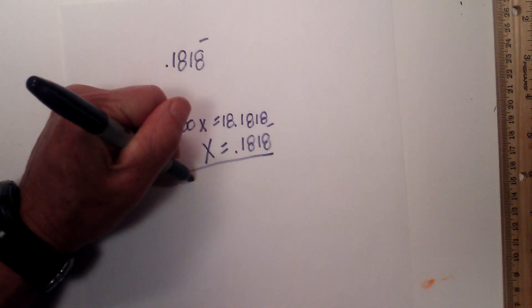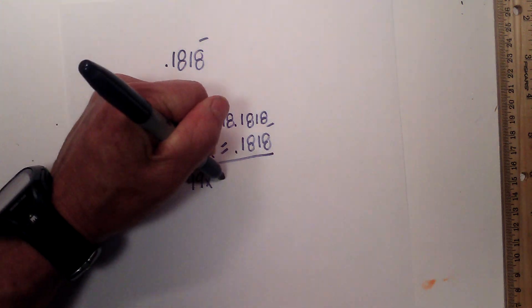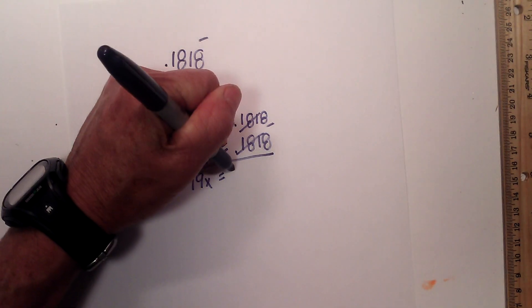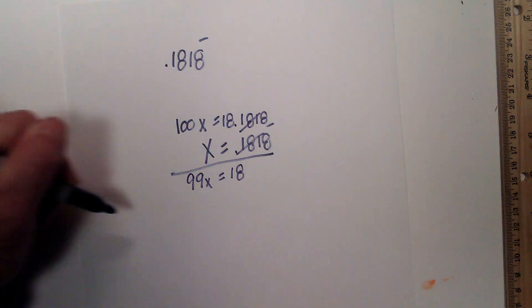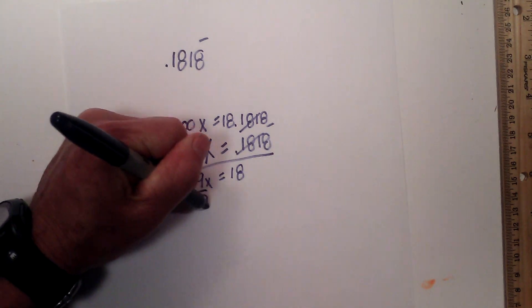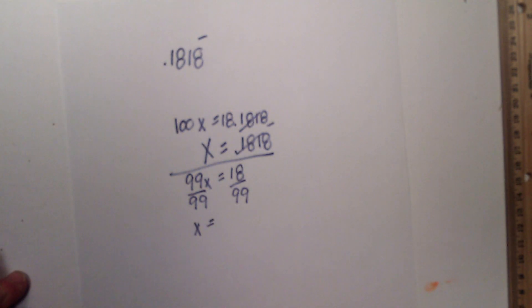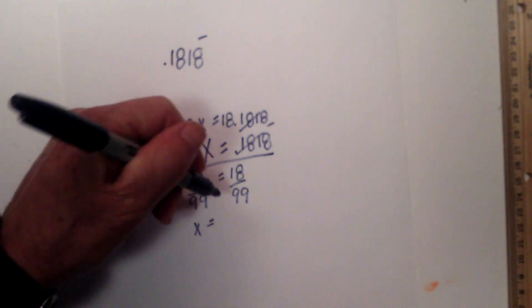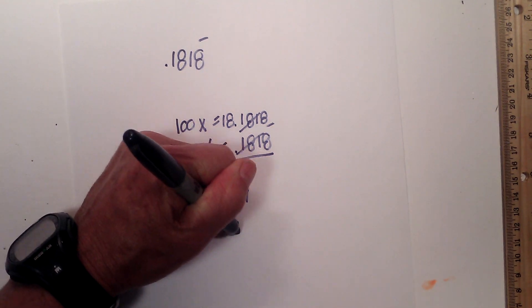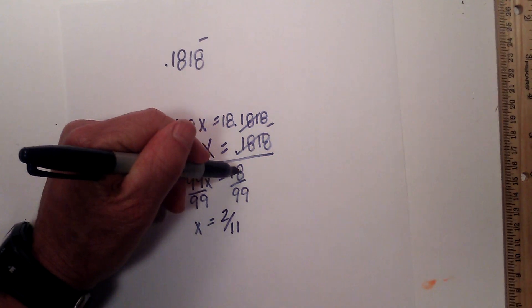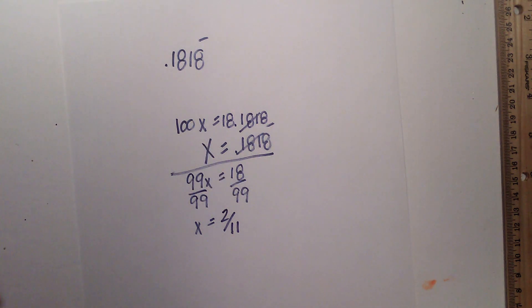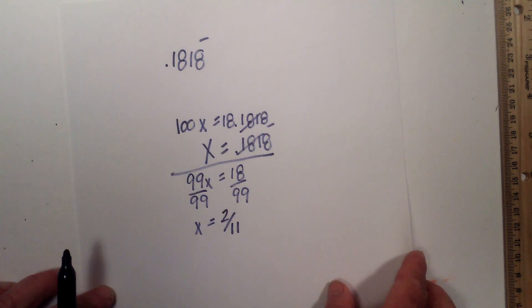Subtract both equations. This becomes 99x is equal to, these cancel out, 18. Divide both sides by 99. So x is equal to, now this is divisible. Let's see here. It is divisible by 9. So that becomes 2 elevenths, because 9 goes into 18 2 times, 9 goes into 99 11 times. That one was ok.